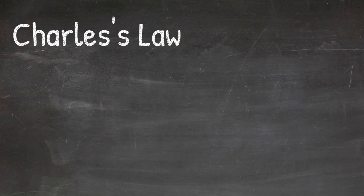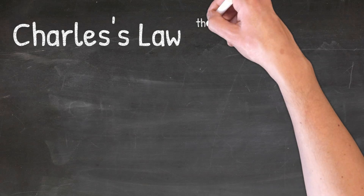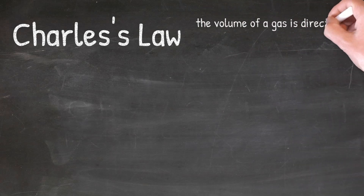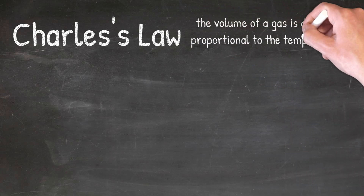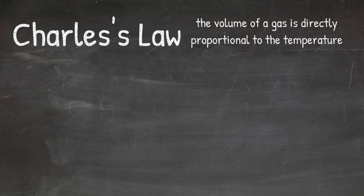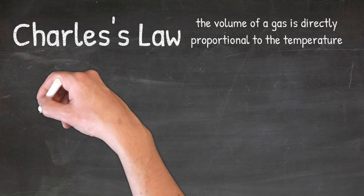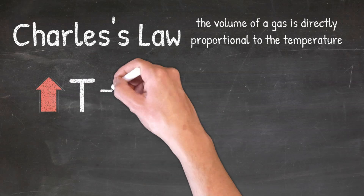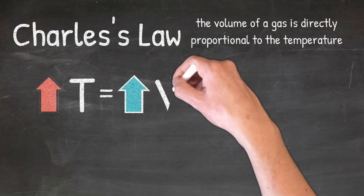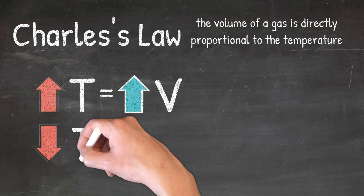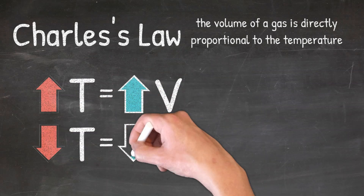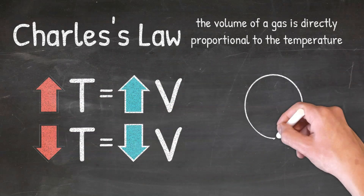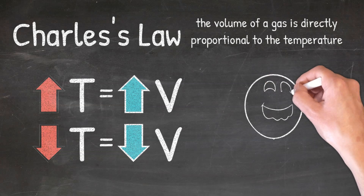Charles' law tells us that the volume of a gas is directly proportional to the temperature. What this means is that when one goes up, the other goes up as well. So if the temperature increases, the volume will also increase, and if the temperature decreases, the volume will also decrease.